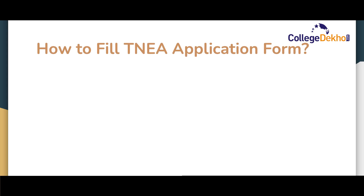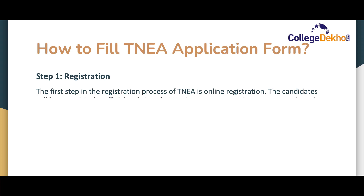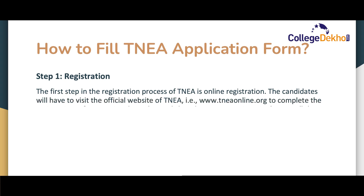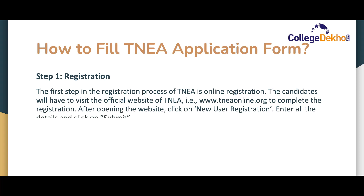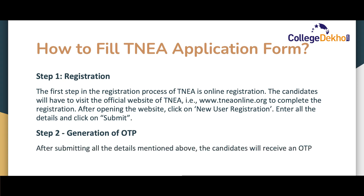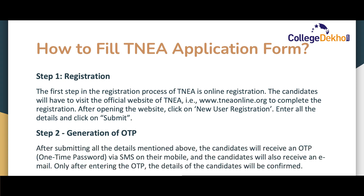Now let us look at the step-by-step process to fill the TNEA application form. The very first step is registration. Candidates will have to visit the official website of TNEA, for which the link has been provided. After opening the website, click on 'New User Registration', enter all the details in the registration form, and click on submit. After submitting, candidates will receive an OTP — that is, a one-time password — via SMS on their mobile, and also via email. Only after entering the OTP will the details of the candidates be confirmed.